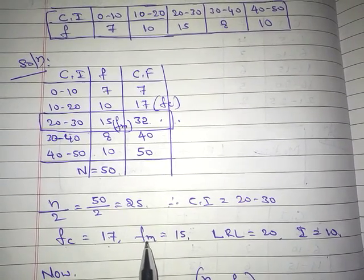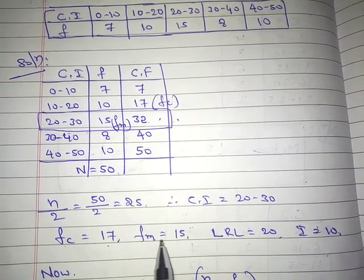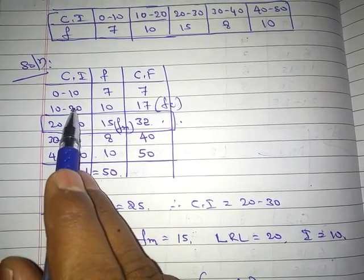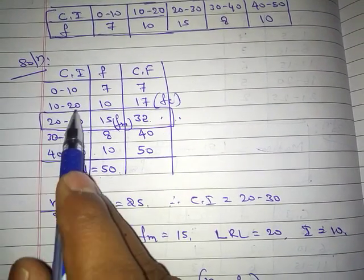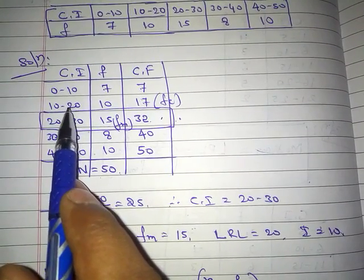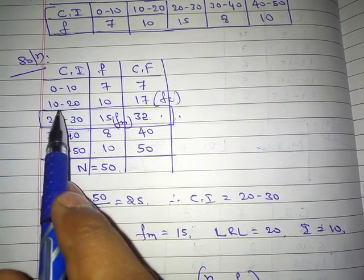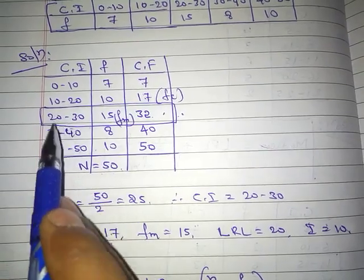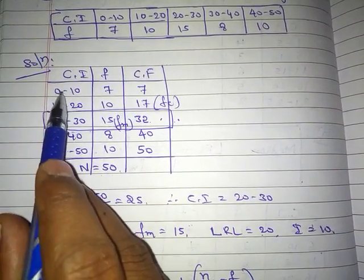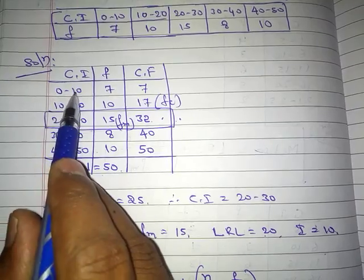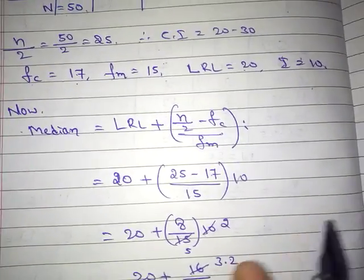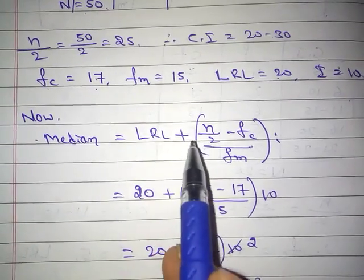The lower limit L: here the class intervals are continuous (0–10, 10–20, etc.), so the lower limit of the median class 20–30 is simply 20. The class interval width i = 10, since 0 to 10 has a range of 10. Now putting these values into the formula: Median = L + (n/2 − fc) / fm × i = 20 + (25 − 17) / 15 × 10.